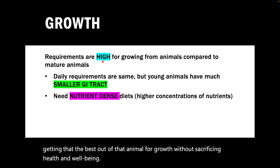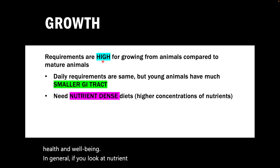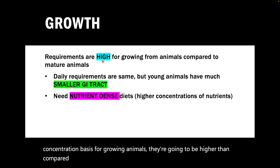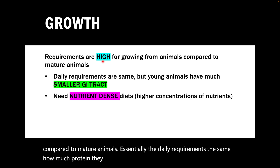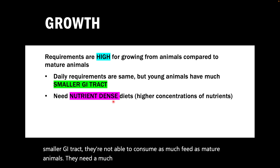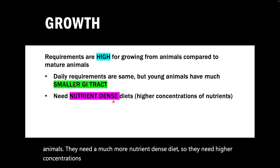In general, as you look at nutrient requirements on a concentration basis for growing animals, they're going to be higher compared to mature animals. The daily requirement may be the same amount of protein they need to eat, but because young animals have a smaller GI tract and are not able to consume as much feed as mature animals, they need a much more nutrient-dense diet — higher concentrations of nutrients to be able to meet the same goal.